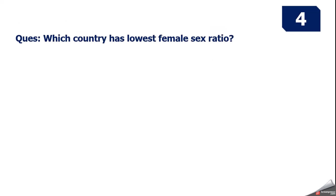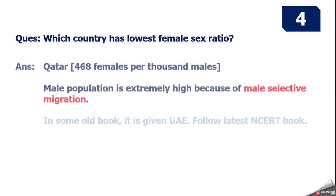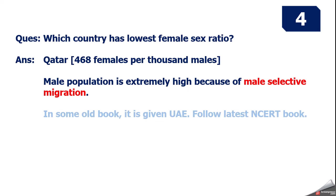Question 4: Which country has the lowest female sex ratio? Answer — Qatar, with only 468 females per thousand males. Male population is extremely high because of male selective migration — many male workers from India, Pakistan, Bangladesh go there to work. Note: some older NCERT books mention UAE instead of Qatar — follow the new book and write Qatar.